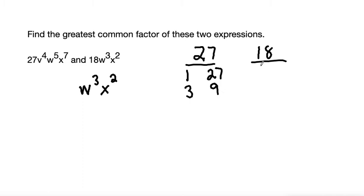18, we can do the same thing. 1 times 18. We always start with 1 in the number. Then let's try 2. 18 is even, so 2 does work, and 2 times 9 is 18. Next let's go to 3. 3 times what is 18? 3 times 6 is 18, so those are factors.